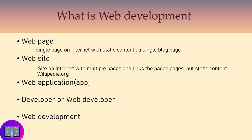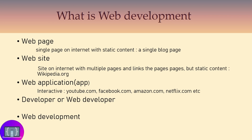A web application is like a website because there are many pages and there are links between those many pages, but the web application is interactive — unlike a website like wikipedia.org which has no interactivity. On a website a user can only view content; he cannot modify content. The web application is interactive. Examples of web applications are YouTube, Facebook, Amazon, and Netflix.